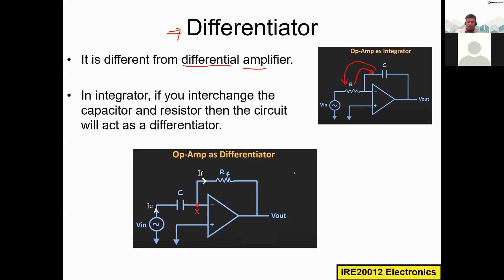This is the circuit of the differentiator. After you give the power supply, current ic flows through the input capacitor C, and current if flows through the feedback resistor Rf. The meeting point of these currents is called node X, and the voltage potential at this node is Vx.